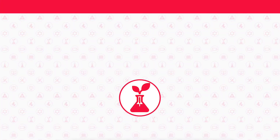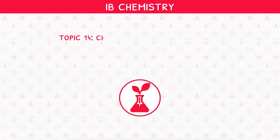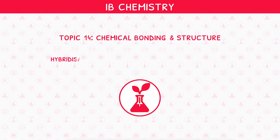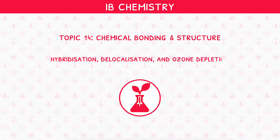Welcome back to our higher level IB Chemistry video series. This is the second and final video in IB Chemistry Topic 14, Chemical Bonding and Structure, where we will be looking at hybridisation, delocalisation and ozone depletion. Before starting this video, ensure you watch our first IB Chemistry Topic 14 video, as this is a direct continuation.